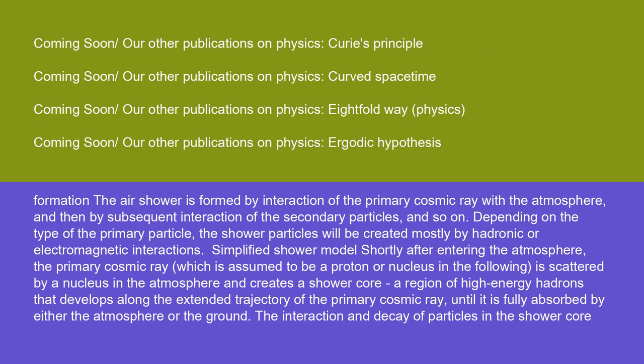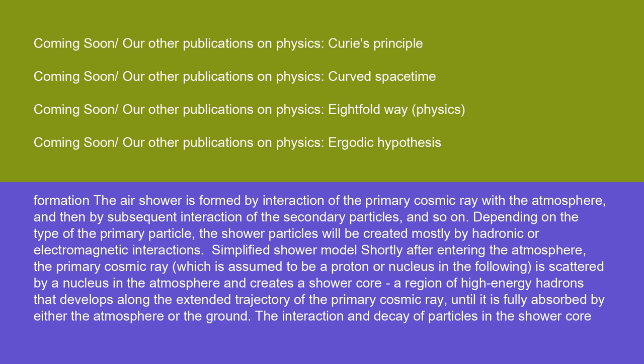Air shower formation. The air shower is formed by interaction of the primary cosmic ray with the atmosphere and then by subsequent interaction of the secondary particles and so on. Depending on the type of the primary particle, the shower particles will be created mostly by hadronic or electromagnetic interactions. Simplified shower model. Shortly after entering the atmosphere, the primary cosmic ray, which is assumed to be a proton or nucleus in the following, is scattered by a nucleus in the atmosphere and creates a shower core, a region of high-energy hadrons that develops along the extended trajectory of the primary cosmic ray until it is fully absorbed by either the atmosphere or the ground.